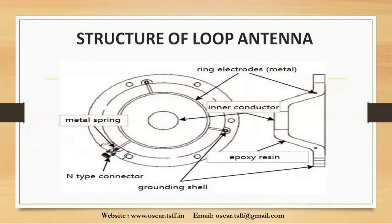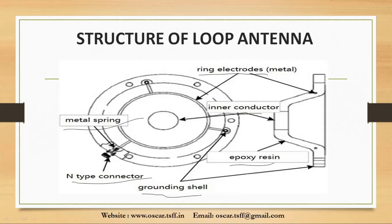Now let's look at the structure of a loop antenna. There is an N-type connector, used to join coaxial cables. There is the inner conductor. Epoxy resin is a type of resin used to protect the antenna from hazards. There is a metal spring and ring electrodes. The grounding shell has zero potential with respect to other points. Note the difference between earthing and grounding: in earthing the circuit is physically connected underground, while in grounding it is not physically connected but simply has zero potential.